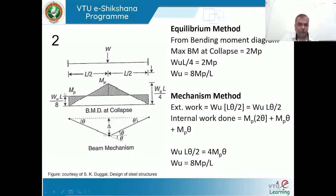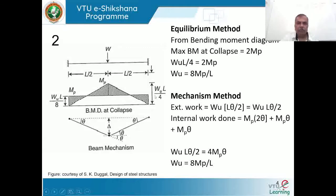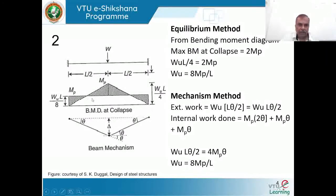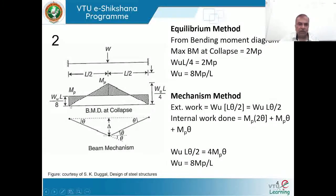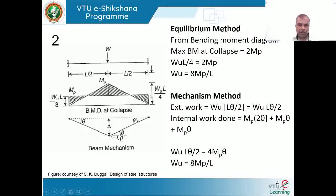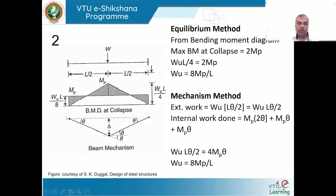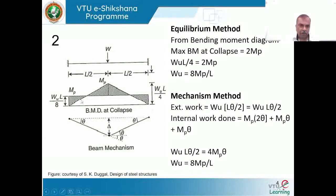When the moment at the ends reaches mp, we have two end moments of magnitude mp each. The free bending moment diagram is positive due to load effect, while the fixed moment is in the opposite direction — negative. Wherever the triangle and rectangle overlap, they cancel out because the bending moments are opposite in nature.